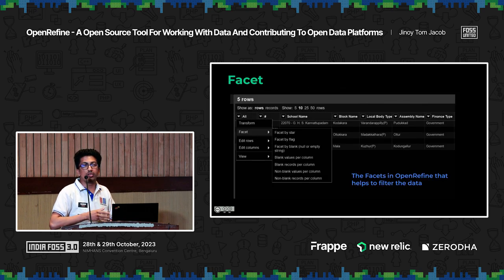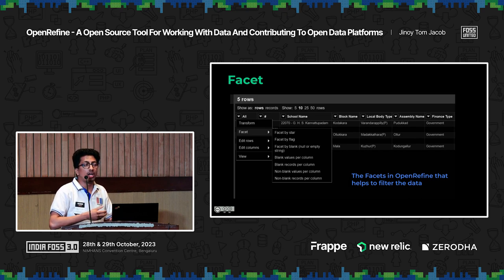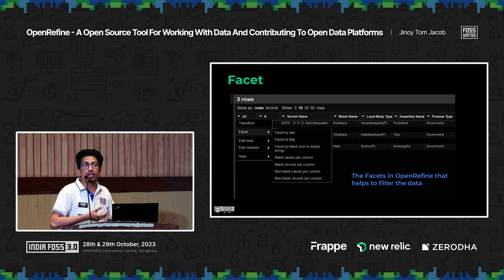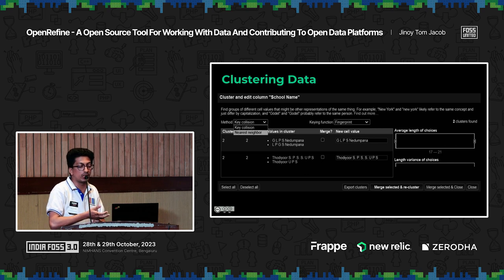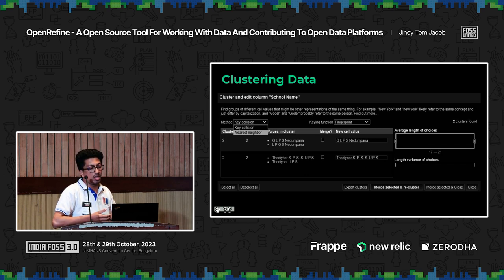In OpenRefine, you can use filters similar to those in a spreadsheet — you can filter information, blank cells if needed, and use advanced features. Sometimes text will be in capital letters, sometimes small letters, or have extra spaces. Using the clustering feature in OpenRefine, you can clean up that information. There are different clustering methods available, like the key collision method and the nearest neighbor method, along with key functions — all available in the clustering feature.